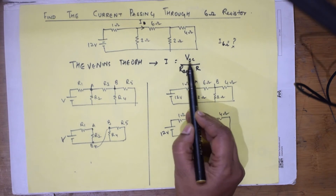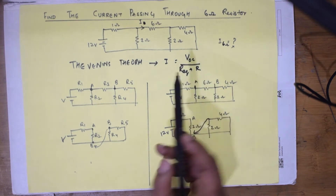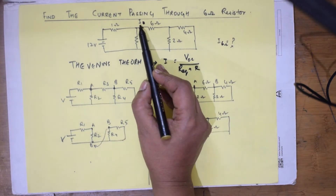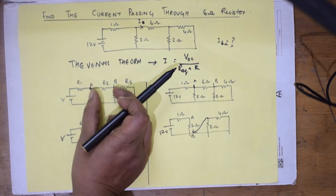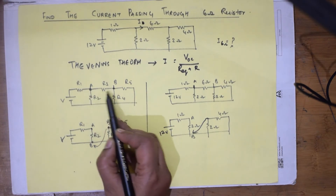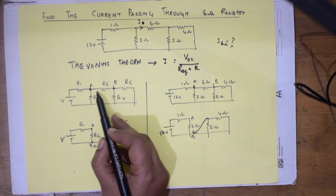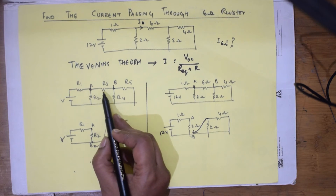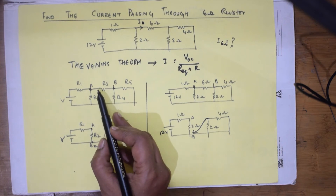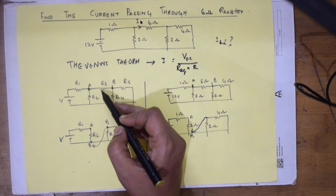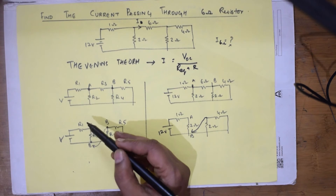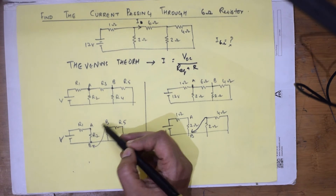Step one: find VOC. VOC means voltage across the resistance of interest — in this case R3. You need to find the current through R3, so VOC is the open circuit voltage, which means voltage across R3 when R3 is removed. As the name suggests, OC means open circuit. So VOC is the voltage across R3 when R3 is removed, that is VAB.